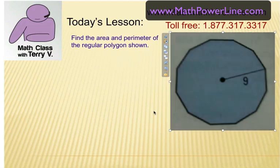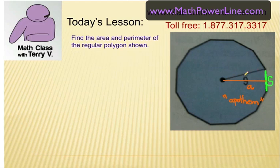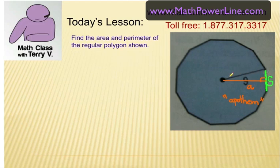We need to use the term apothem. When we have a regular polygon, we have the radii coming out from the center — it's 9 according to what Molly sent us, all the way around. When I draw a line from the center to the midpoint of any one of the sides, that's called an apothem. It's one way we measure the size of a regular polygon, and it's used in the area formula. The apothem goes to the midpoint of a side and forms a right angle, so we have a right triangle. The hypotenuse is 9, A is the apothem (the longer leg), and the short leg is half of one side.